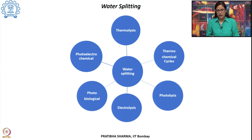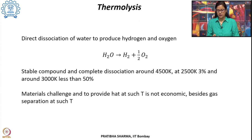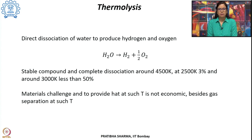When hydrogen is produced from water splitting, the only products are hydrogen and oxygen. The resulting emissions present in hydrocarbon-based production methods are absent when hydrogen is produced from water. However, this depends on where the energy required for splitting water comes from.